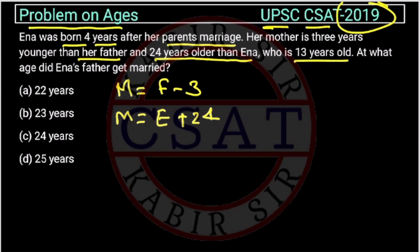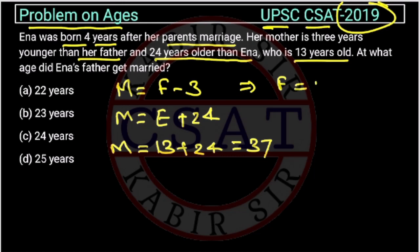Currently Anna is 13 years old. So the mother's age will be 37, and the father's age will be 37 plus 3, which is 40. So the current age of the father is 40, the mother is 37, and Anna is 13 years.